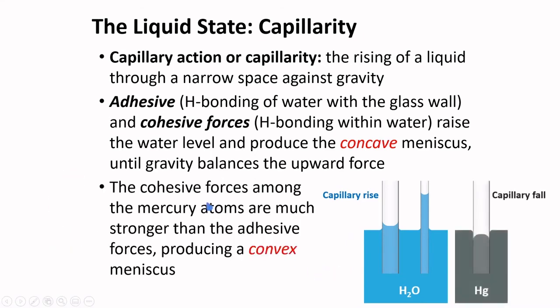The cohesive forces among the mercury atoms are much stronger than the adhesive forces. They produce a convex meniscus. The depression of the liquid level in a convex meniscus is known as capillary fall.